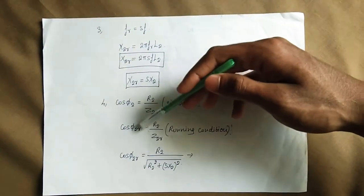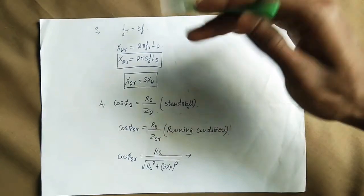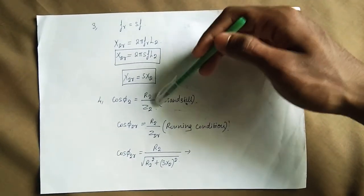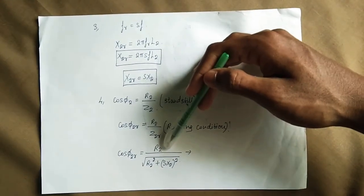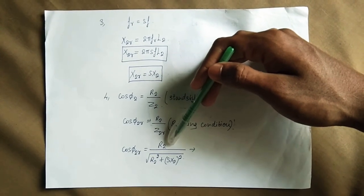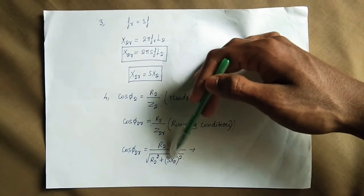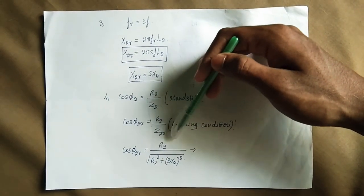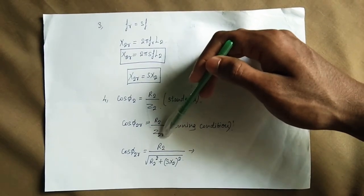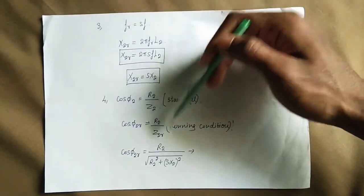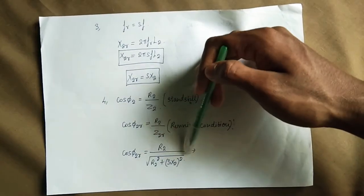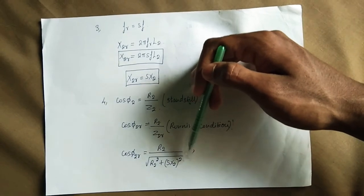The power factor is the ratio of resistance to impedance. The rotor power factor cos φ2 equals R2 divided by Z2R, where Z2R is the running impedance. The running impedance Z2R equals the square root of R2 squared plus (S×X2) squared.